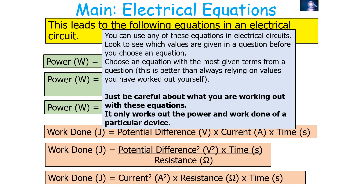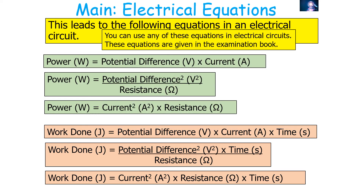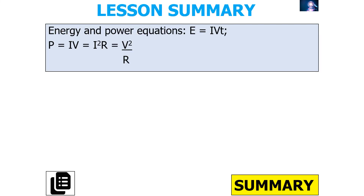Be careful — these equations only calculate the power and work done of one device in the electrical circuit. All of these equations are provided in your AQA examination book. To summarise: energy equations are W = IVt, and power equations are P = IV, P = I²R, and P = V²/R.